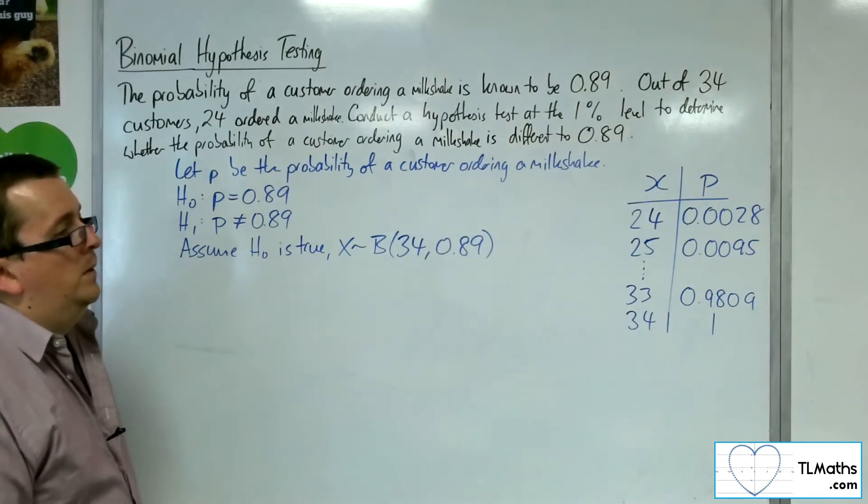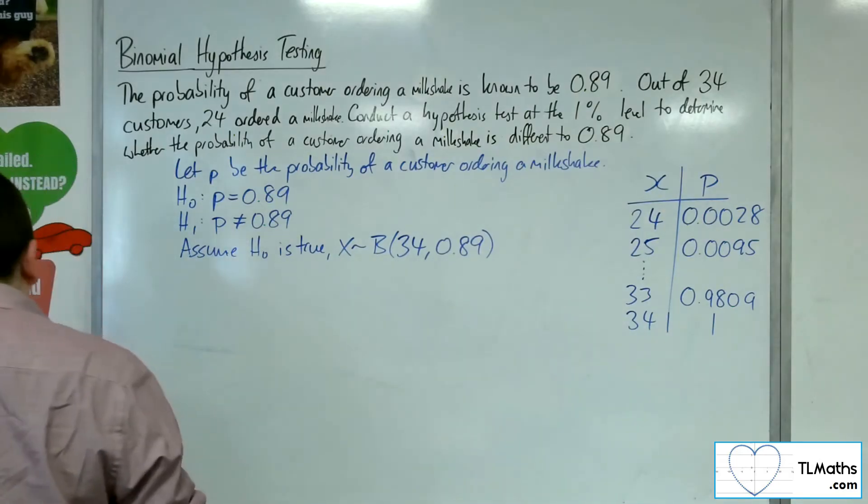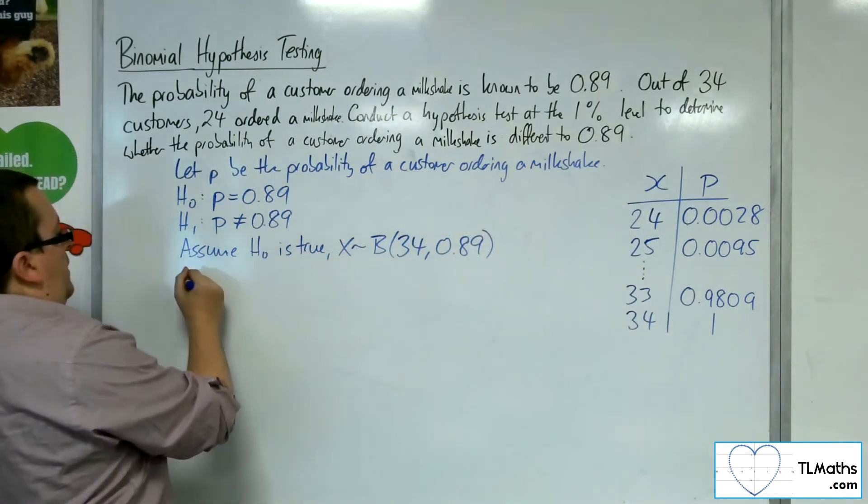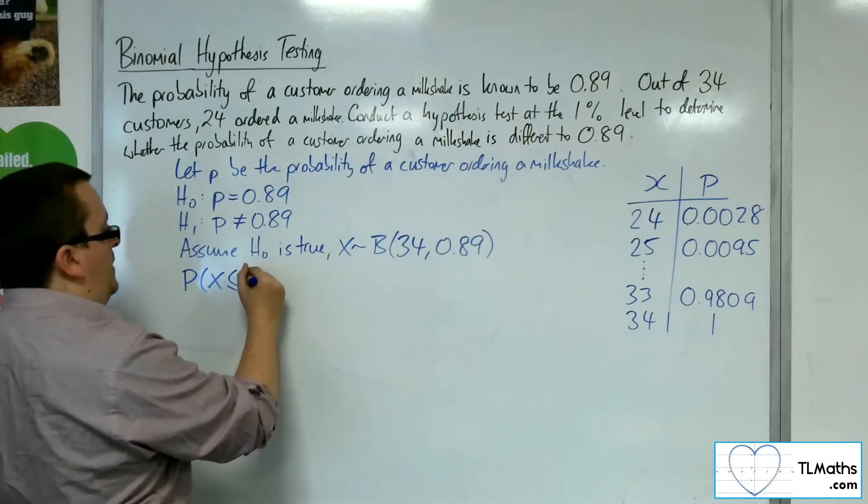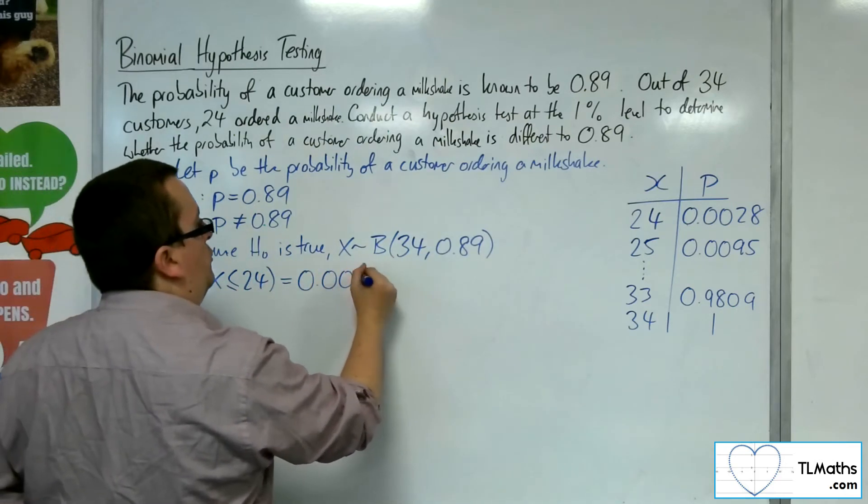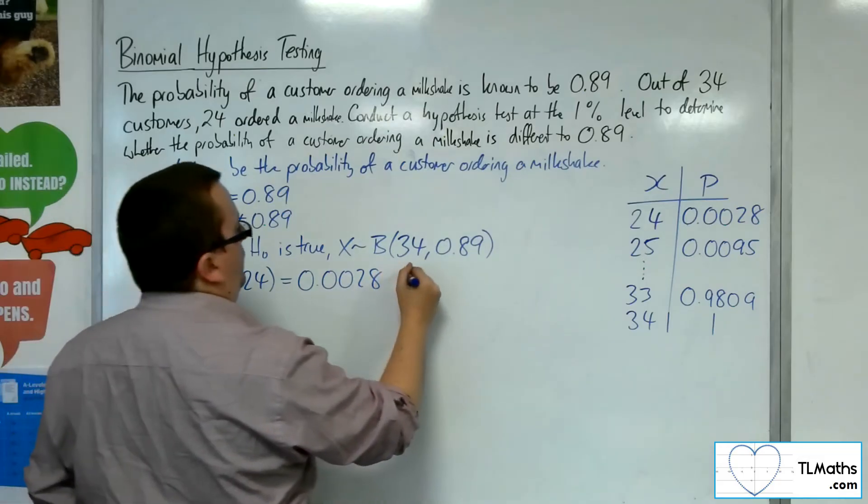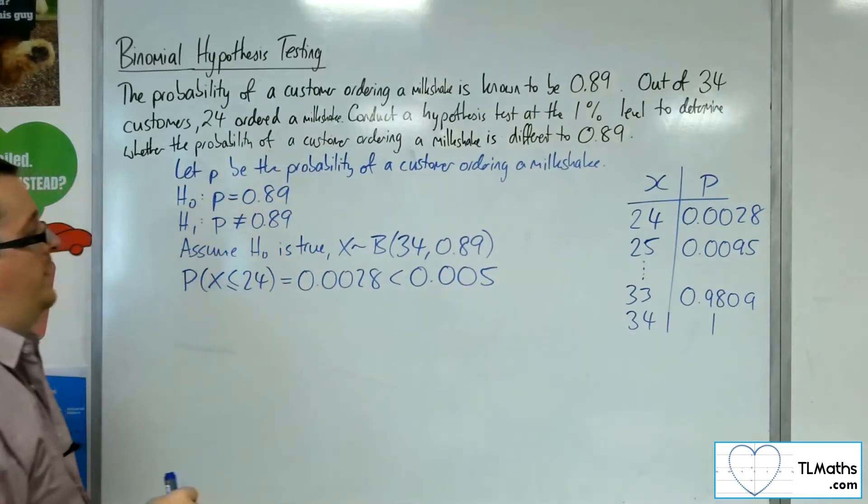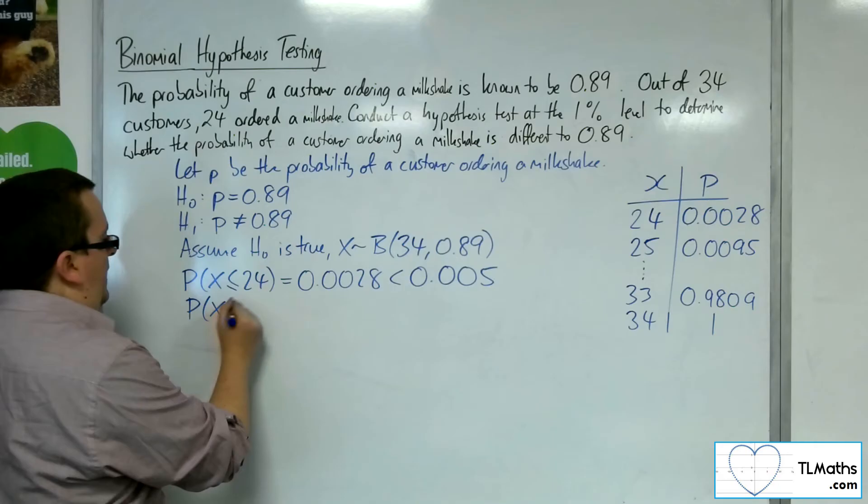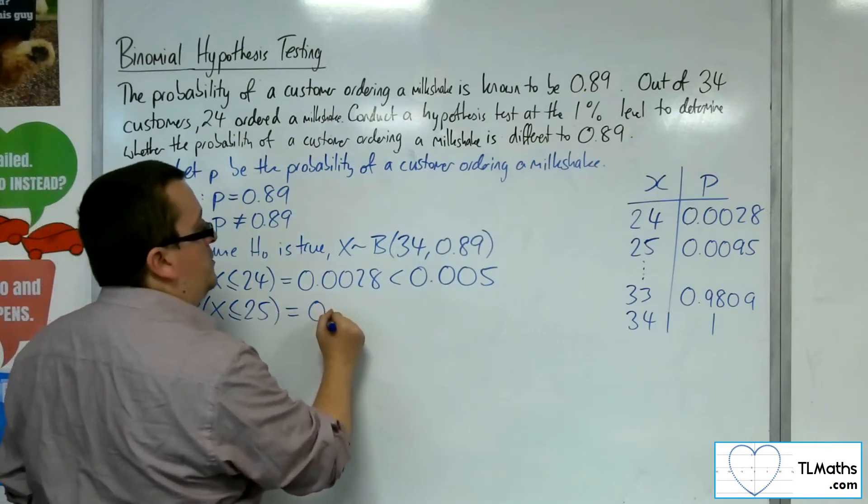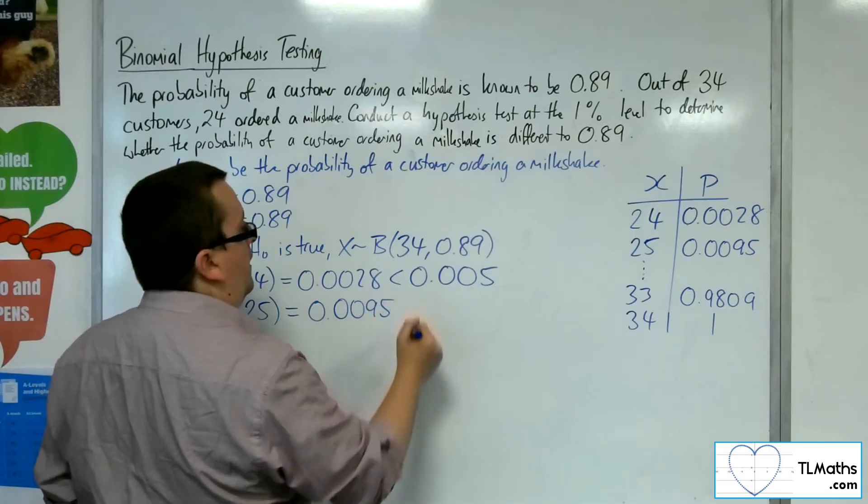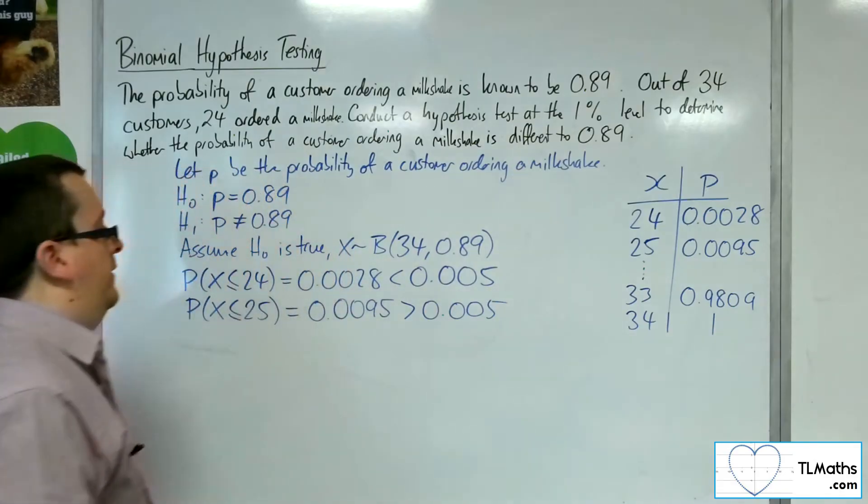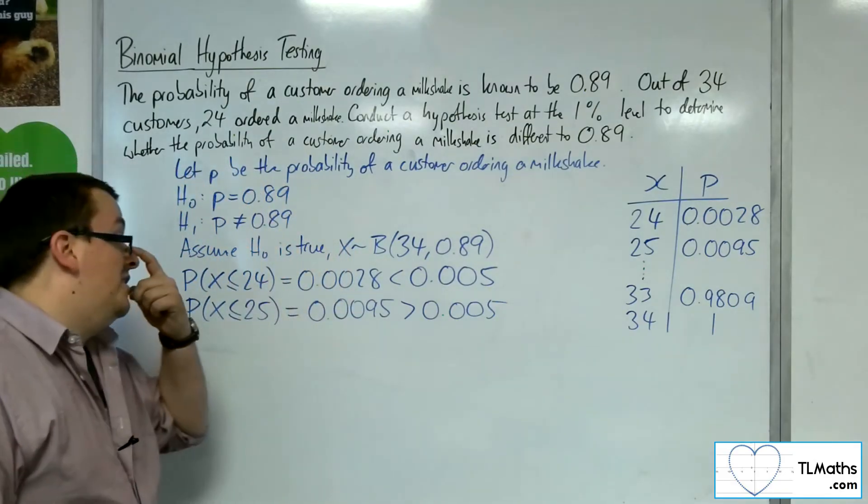Because the probability of X being less than or equal to 24 is 0.0028, which is certainly less than the 0.005, because half of the 1% significance level, and the probability of X being less than or equal to 25 is 0.0095, which is greater than the 0.005 significance, I've got 24 and under being in my critical region.